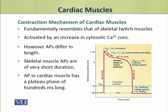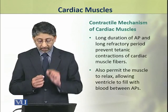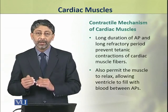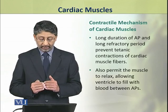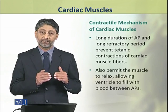The action potential's length differs in both cardiac and skeletal muscles. Skeletal muscles' action potentials are of very short duration, whereas the action potential in cardiac muscles has a plateau phase of hundreds of milliseconds long. This long duration results in a longer refractory period, which prevents the tetanic contractions of cardiac muscle fibers.